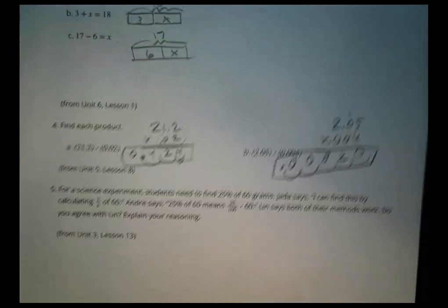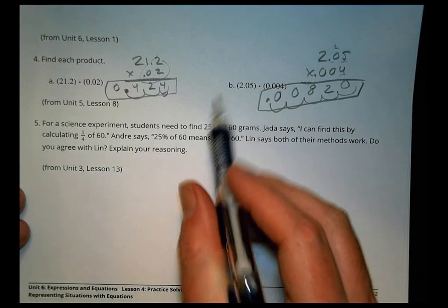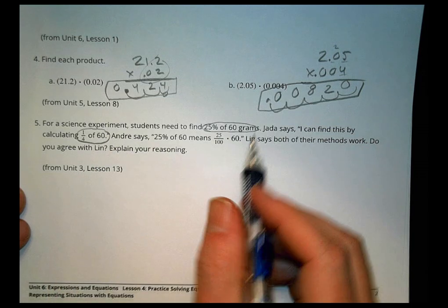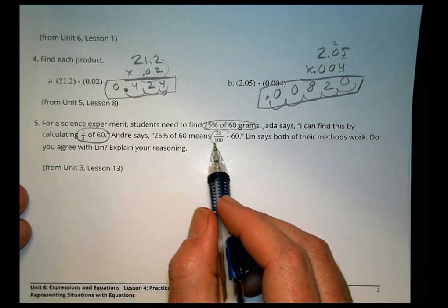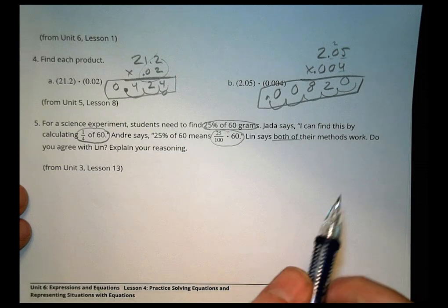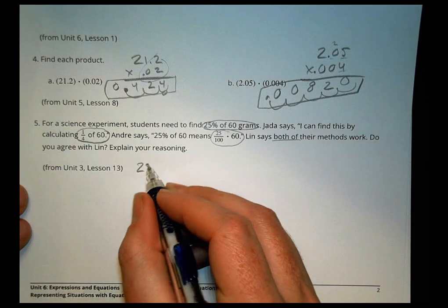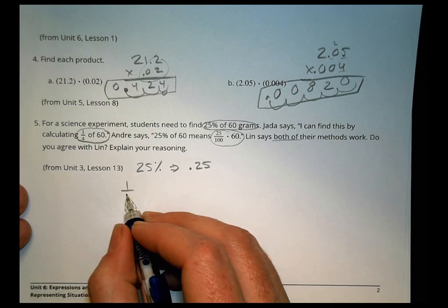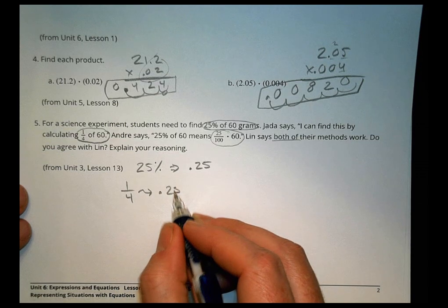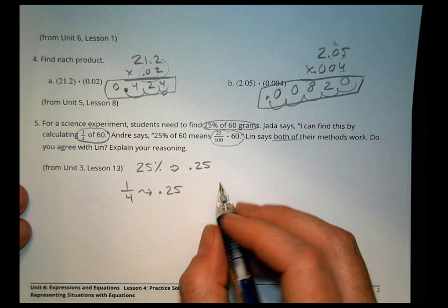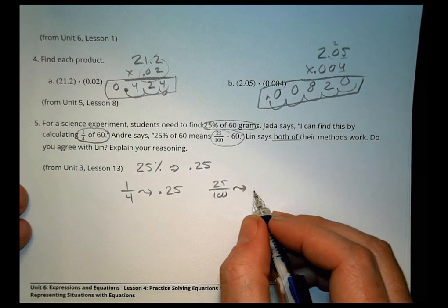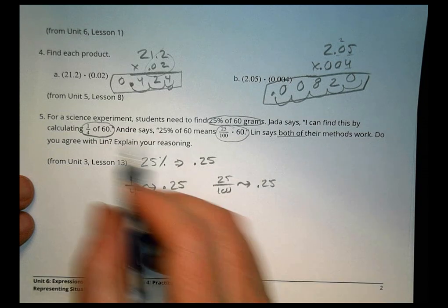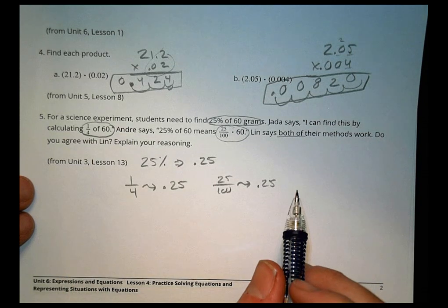And the last one here for the day. For a science experiment, students need to find 25% of 60 grams. Jada says I can find this by calculating 1 fourth of 60. Andre says 25% means 25 out of 100 times 60. Lynn says both work. Do you agree with Lynn? Well, let's take a look. Well, 25% is the same as .25. Now, for Jada, she did 1 fourth. 1 fourth has a value of .25. So that's going to work out. Now, for Andre, he did 25 out of 100, which again has a value of .25. It's the same thing. So both of them are saying the same thing. They're both multiplying by 60. So we would agree with Lynn that both of their methods are going to work out just fine.